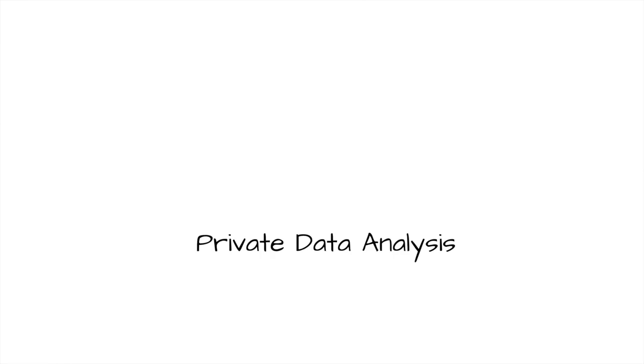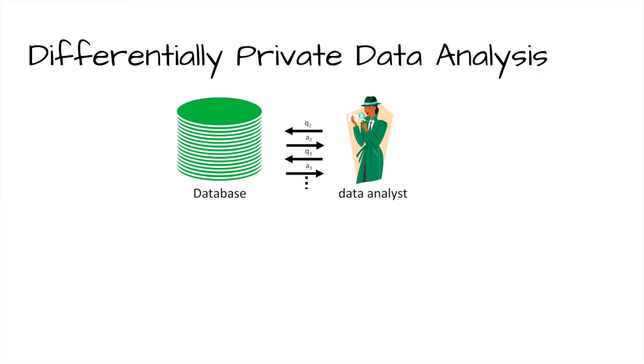Now you're armed with the language to understand the definition of differential privacy. Here is my computational model: a data analyst interacts with a database in a very abstract way. She asks questions like 'what is the fraction of people in the data set that are over six feet tall?' and gets an answer — say 40%. Based on that, she might choose a new question, like 'how many people like muffin tops?' and gets an approximate answer.